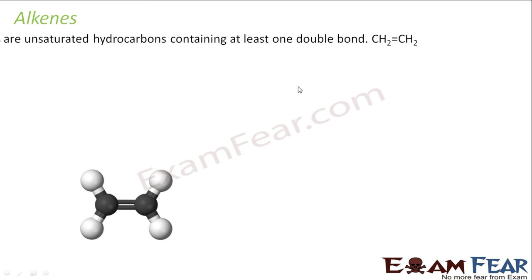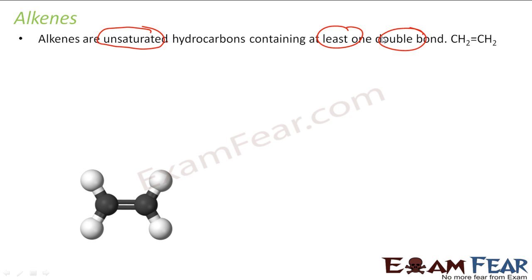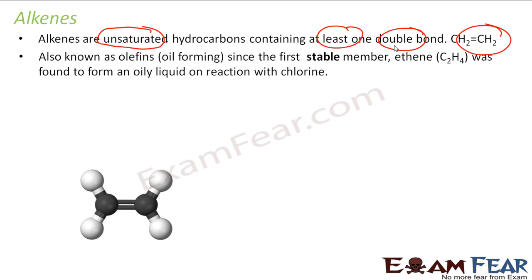What are alkenes? Alkenes are unsaturated hydrocarbons. Please note they are unsaturated hydrocarbons. They have at least one double bond. They can have more than one double bond also, but they should have minimum one double bond. For example, ethene — if you see, there is one double bond.